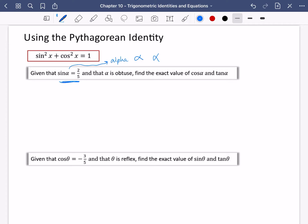Given that sine alpha equals two fifths and that alpha is obtuse, find the exact value of cos alpha and tan alpha. Okay, so let's start off by finding the exact value of cos alpha. But they've told us something weird about it being obtuse. We're going to deal with this bit first and then we'll come back to this bit afterwards.